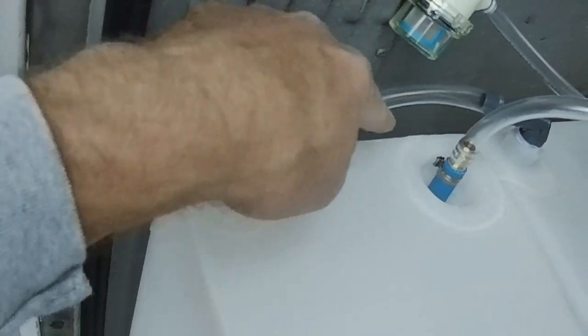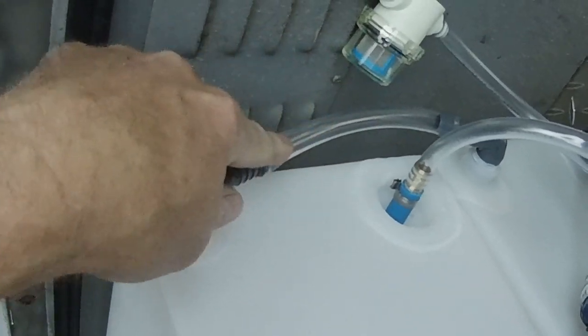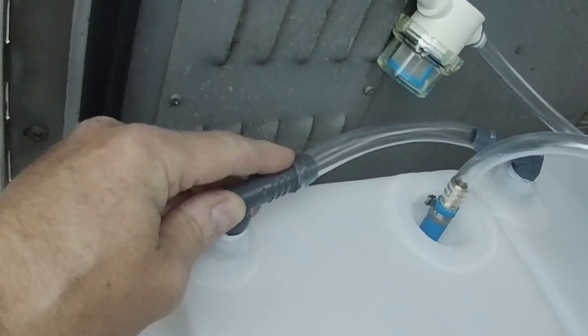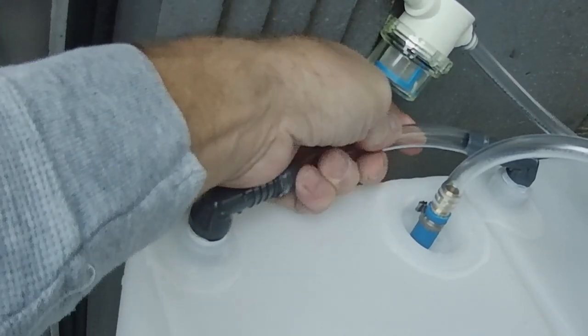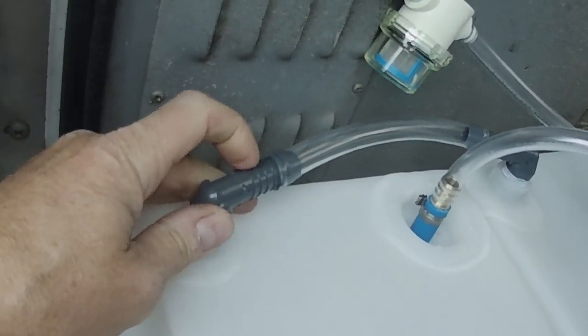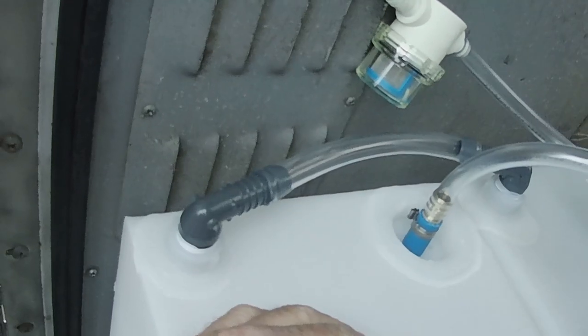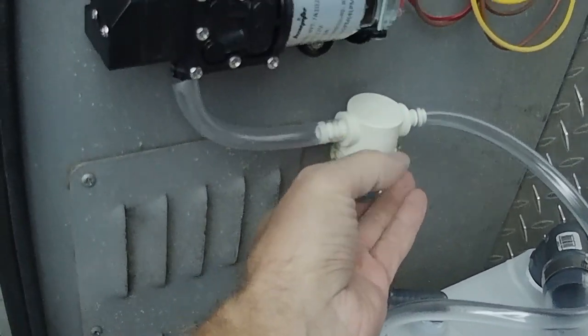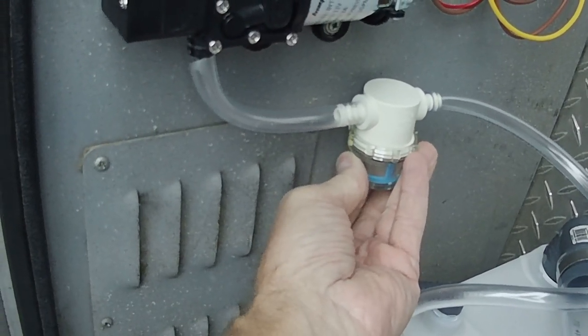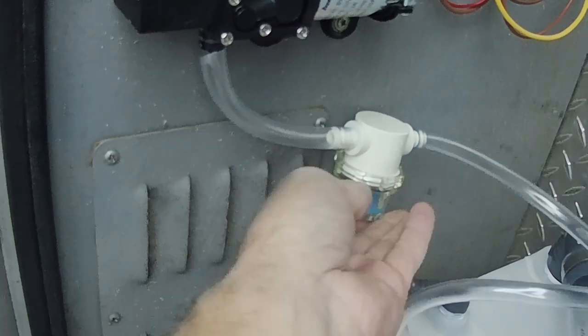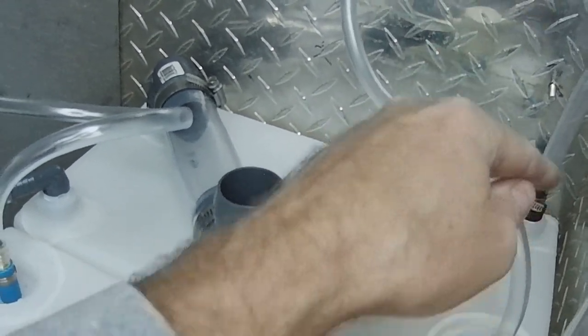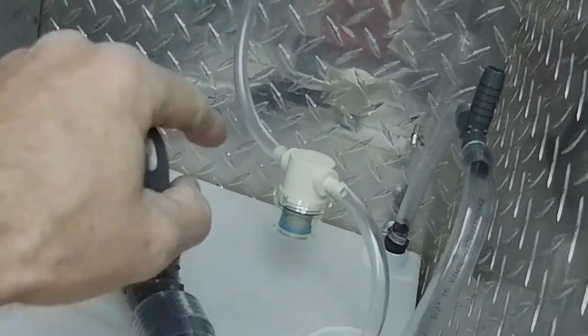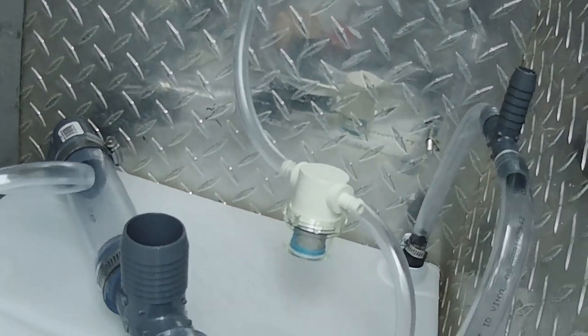Today what I want to do is get these all seated and clamped because even though I'm using the correct size hose clamp on the correct size hose for this barb, I was still getting a leak up here. You can't tighten the hose clamp any tighter than it is. I'm hoping that the PEX system is going to take care of that problem. I'm going to get this all buttoned up.